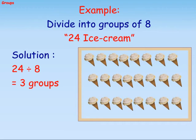Example: Divide into groups of 8, 24 ice creams. Solution: 24 divided by 8 equals 3 groups.